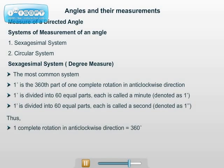Thus, one complete rotation in anticlockwise direction equals 360 degrees. 1/360th part of one complete rotation equals 1 degree. 1 degree equals 60 minutes, and 1 minute equals 60 seconds.